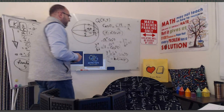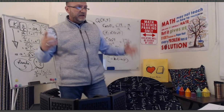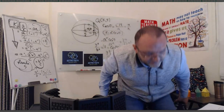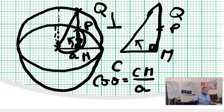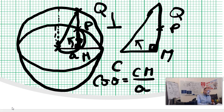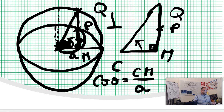Parametric mode is not that difficult. As long as you understand it's counterclockwise, θ is between 0 and 2π, and the angle is the eccentricity angle at the center — not at the focus — nothing is overly hard. It's actually less difficult than polar.